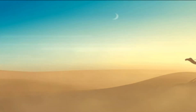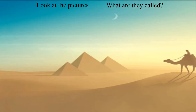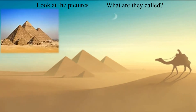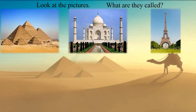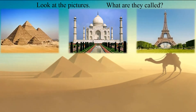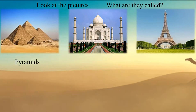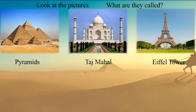Look at the pictures below. What are they called? We have three pictures here. The first one is Pyramid, this is Taj Mahal, and the last one is Eiffel Tower.